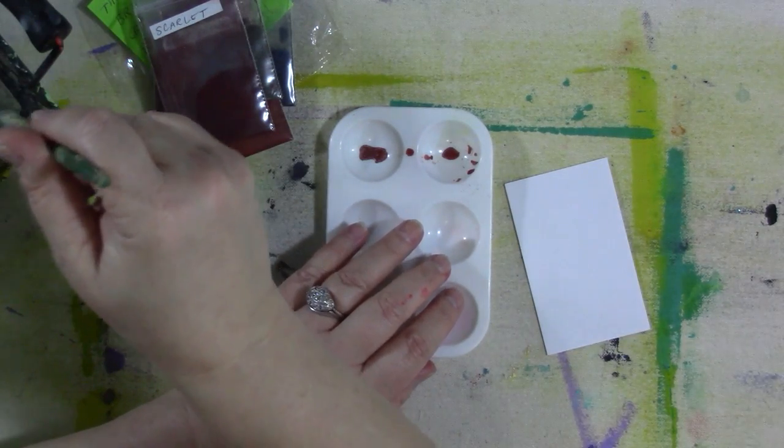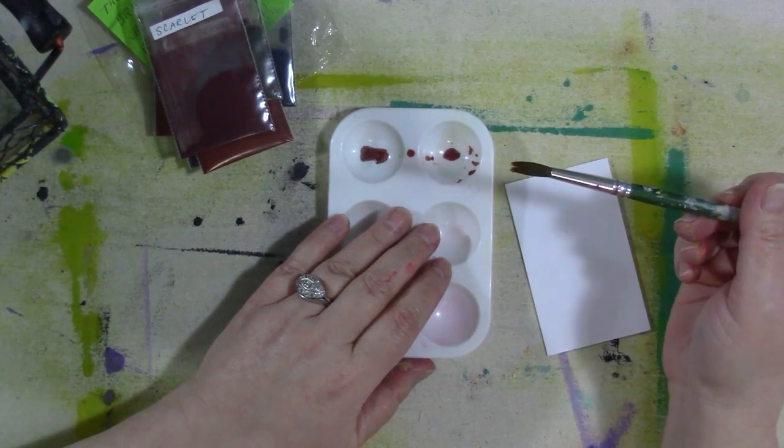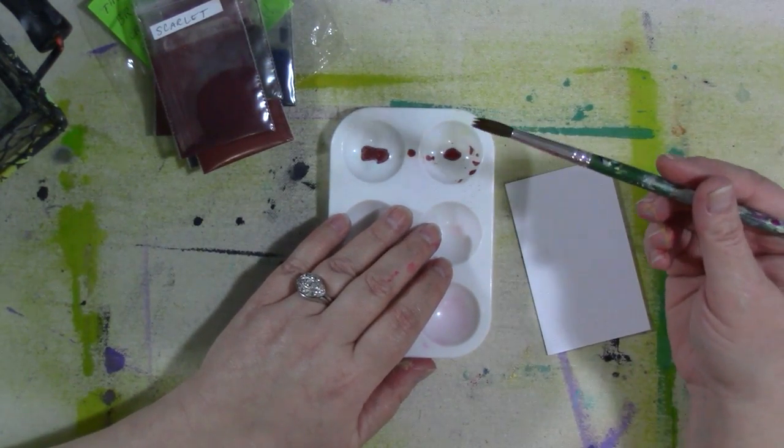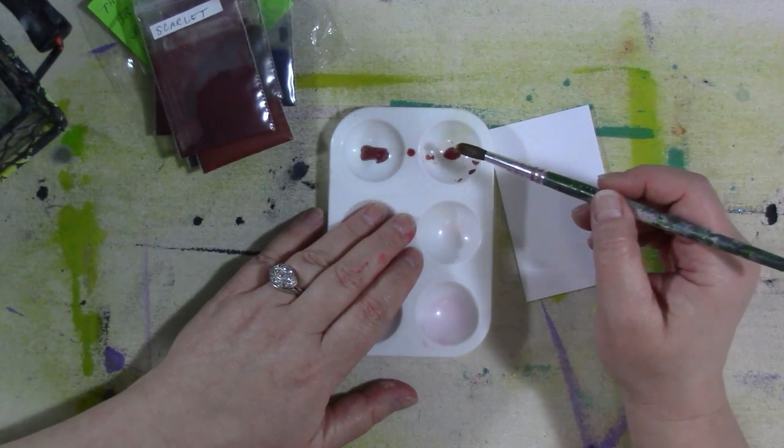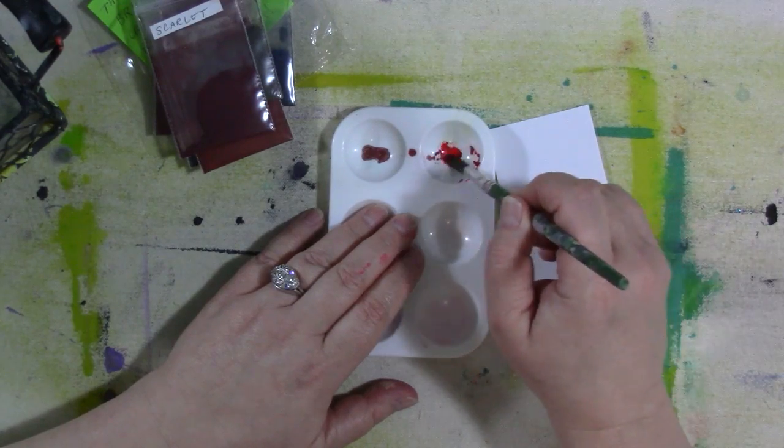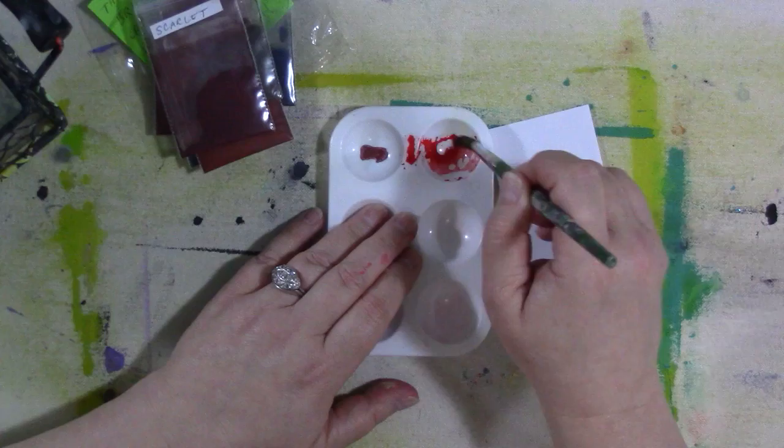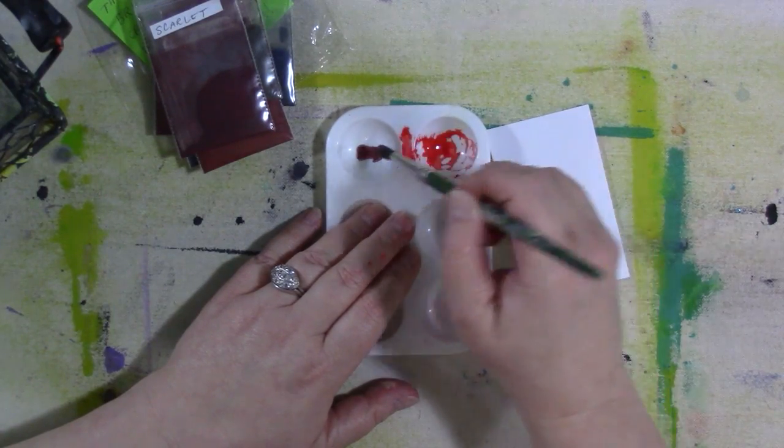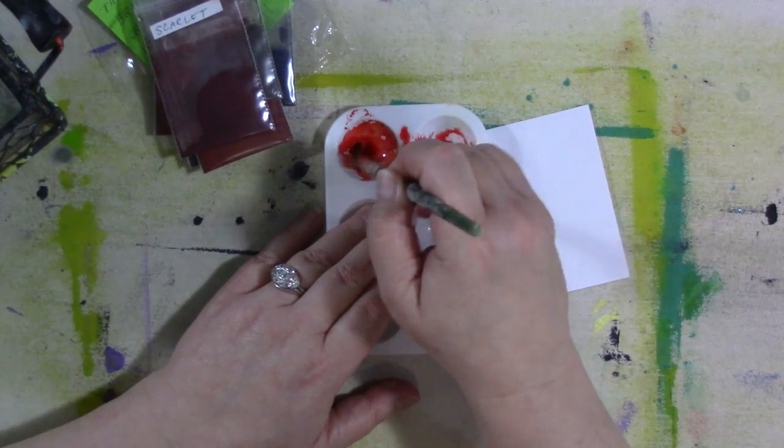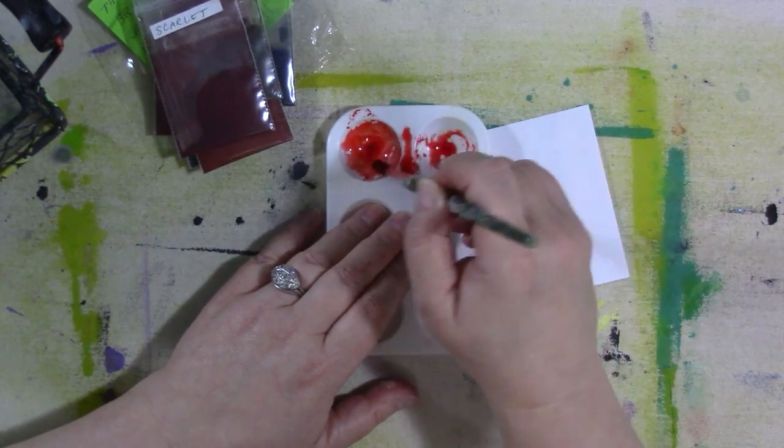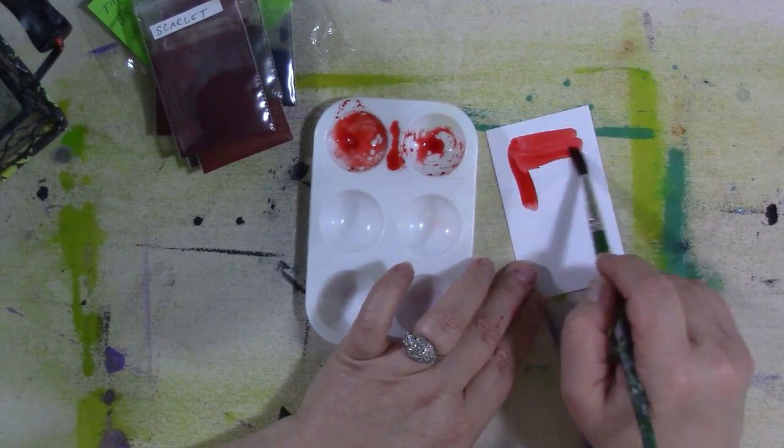So I have no idea. I know nothing about Brushos except for what you all have said to me. I have a little scrap piece of paper here, and let's - this brush is wet, so let's see what happens. Look at that. It looks like they reconstitute and dissolve in the water again very well. Look how bright that scarlet color is.